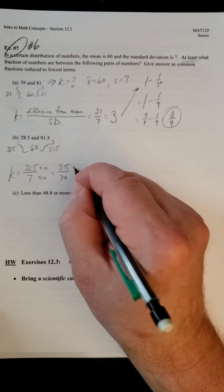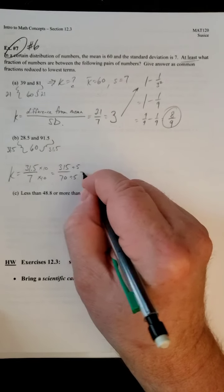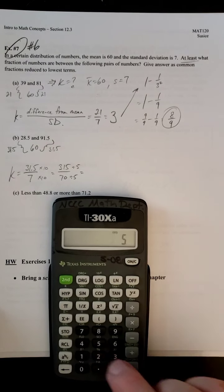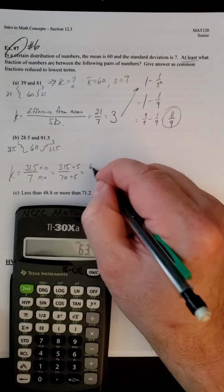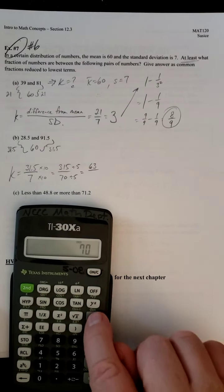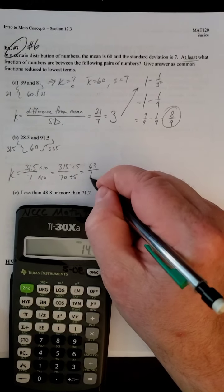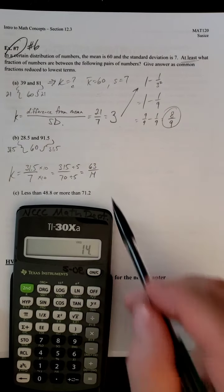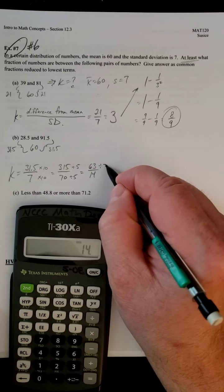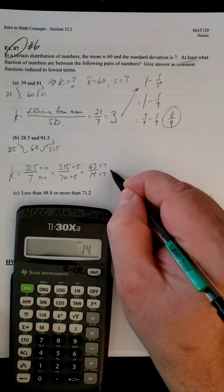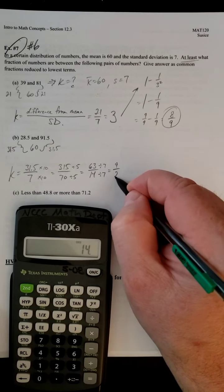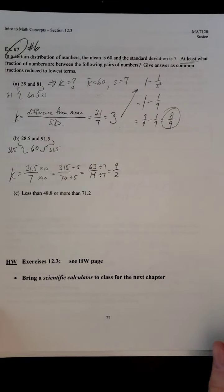What goes into 315 and 70? Hopefully you're screaming at me, 5. 5 goes into both of those. 315 divided by 5 equals 63, and 70 divided by 5 is 14. But is that in lowest terms? It's not. There's still something else that goes in. If you look carefully, you will see that 7 goes into both of those. So 63 divided by 7 is 9, 14 divided by 7 is 2. And that's in lowest terms.